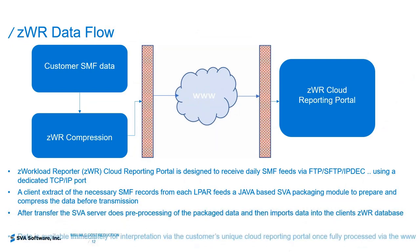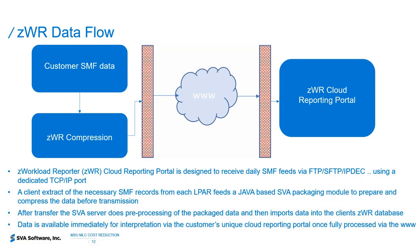The ZWR data flow reads select RMF SMF data types 70 to 74, then passes through z-compress to compress the data on the mainframe before it's uploaded via FTP. It then populates and makes the data available through the ZWR cloud reporting portal, and this process can be fully automated.